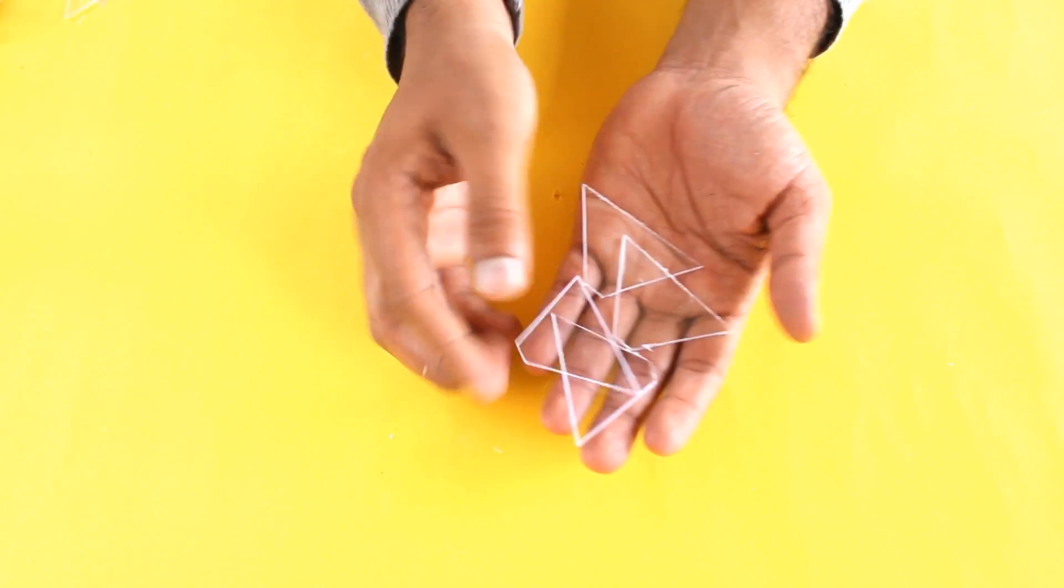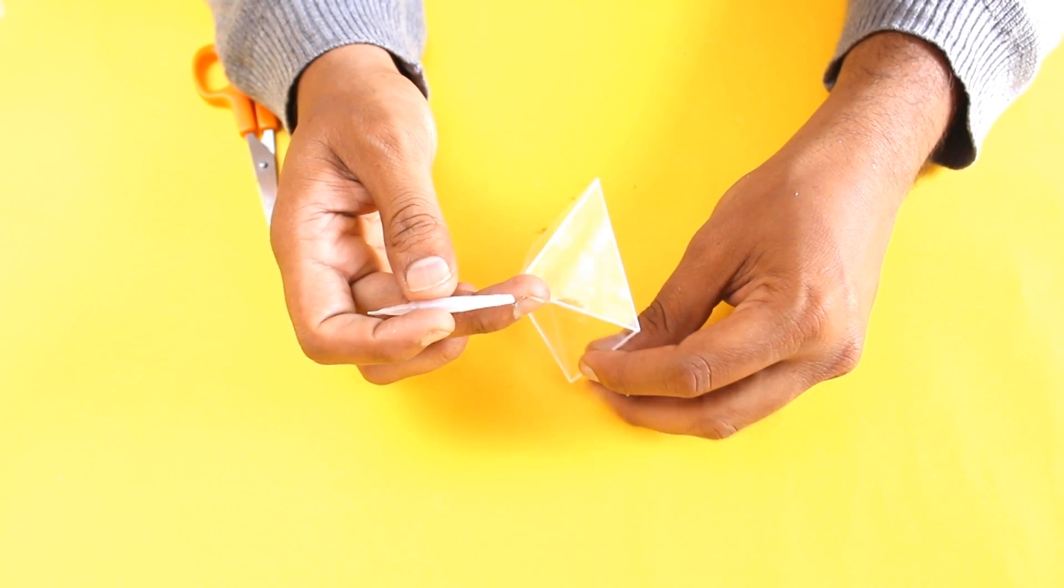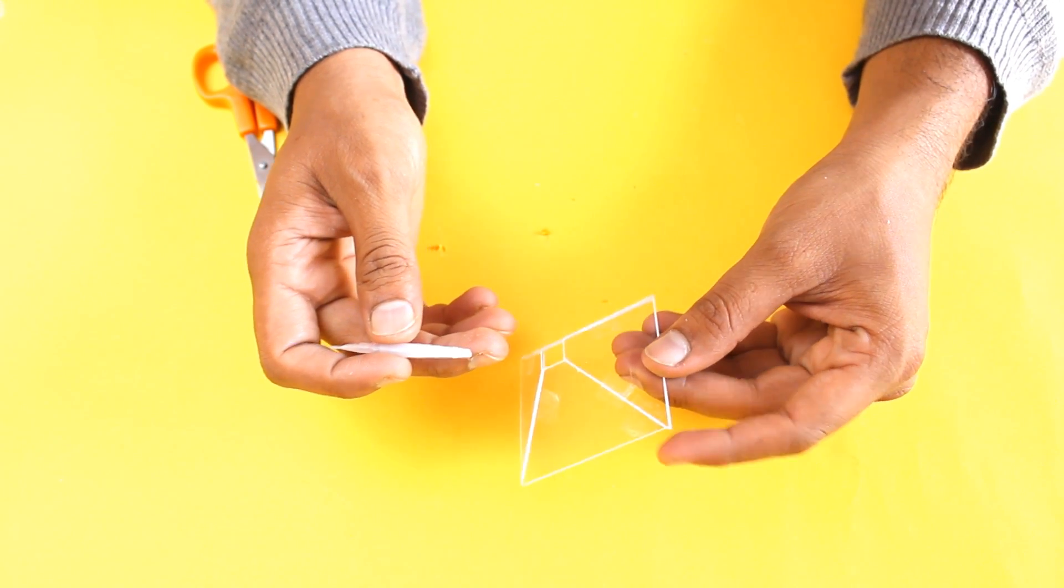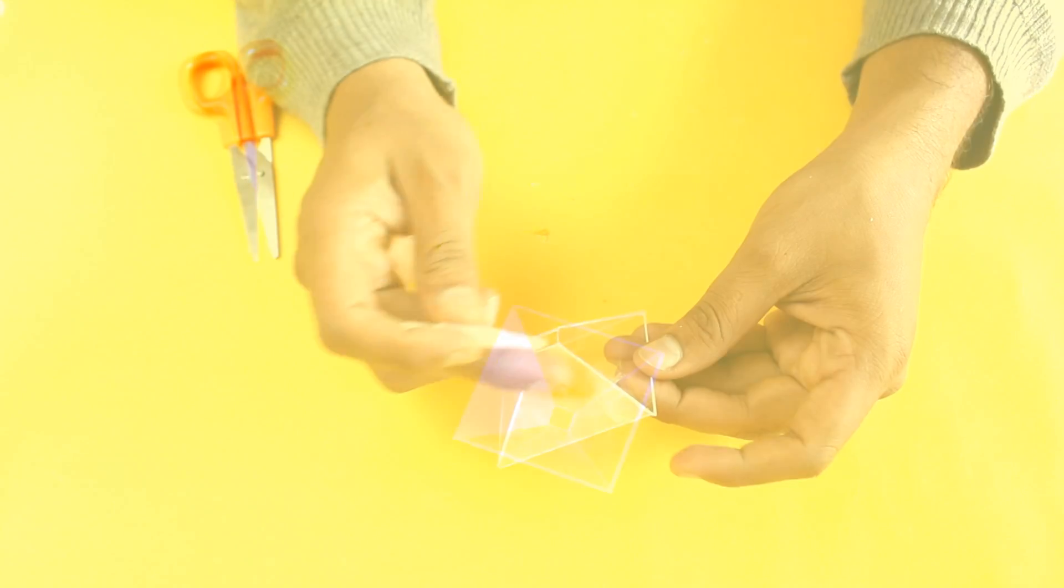We will get four identical pieces like this. In case of a plastic CD case, stick them in the shape of a pyramid with the help of tape and apply glue and leave it for proper protection.